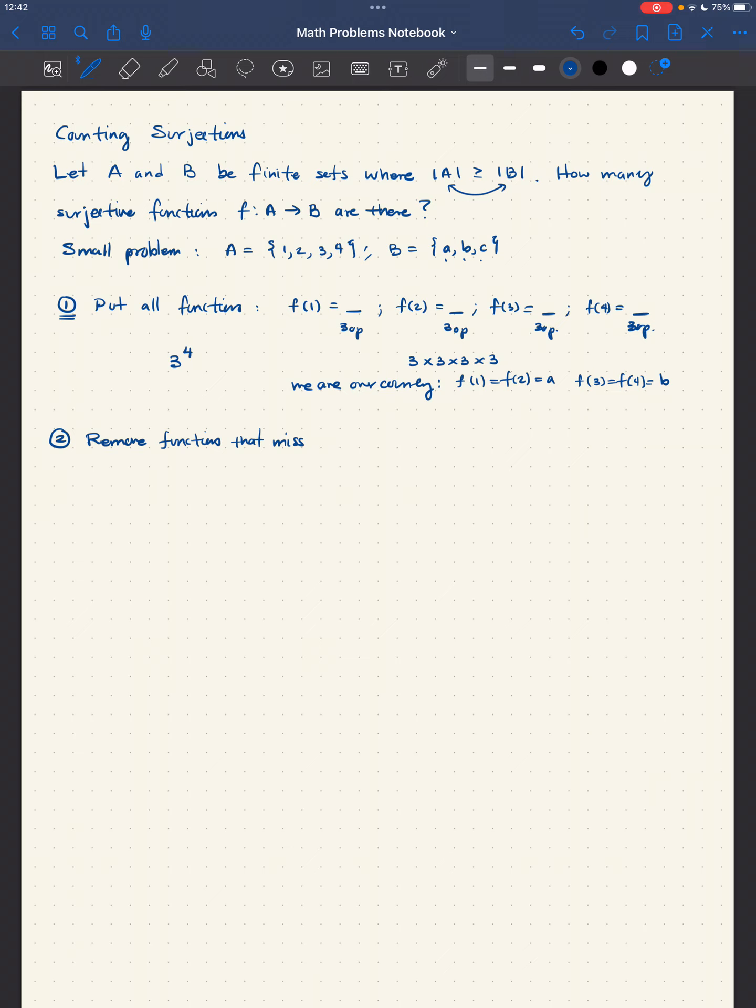By miss, I indicate that the element is not in the range of that function. So, the ones that miss a are functions that go from {1, 2, 3, 4} to the set containing {b, c}. Because a is not present in the range, so we can completely define the function in this fashion. Those that miss b are functions from {1, 2, 3, 4} to the set containing {a, c}. In a similar token, those that miss c are functions from {1, 2, 3, 4} to the set containing {a, b}.